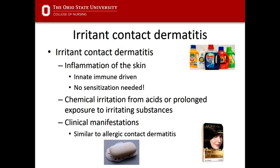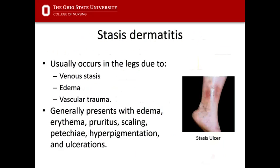The next type is stasis dermatitis. This generally occurs in people with poor circulation and is often a sign of venous insufficiency. It usually occurs in the legs due to venous stasis, edema, and vascular trauma. It can occur in one or both legs. Swelling and edema is usually the first sign, but you'll also have erythema, pruritus, scaling, petechiae, hyperpigmentation, and ulceration.